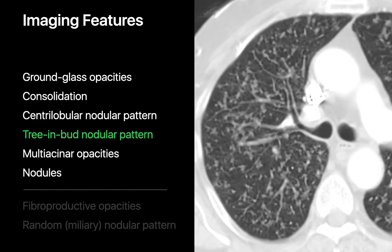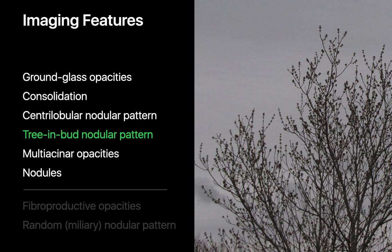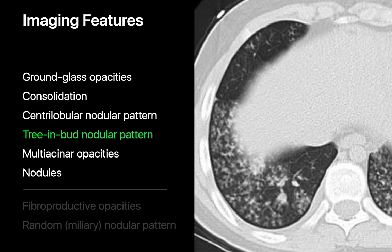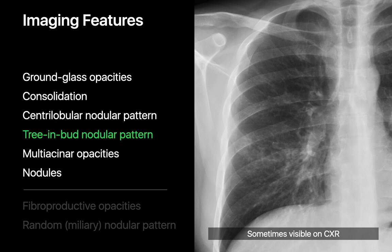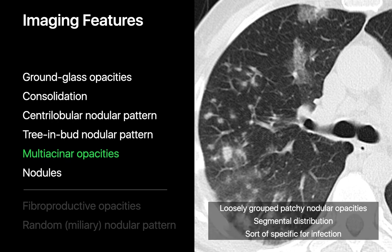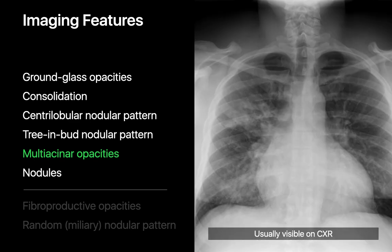We look for tree-and-bud nodular patterns, which evoke the appearance of a tree budding in springtime, presenting as multiple small clusters of discrete micronodules connected by small branching linear opacities. Tree-and-bud patterns are very specific for lung infection and are sometimes visible on chest radiography as a regional heterogeneous opacity with a subtle micronodular texture. We also look for multi-acinar lung opacities — loosely grouped patchy nodular opacities with indistinct margins, often in a segmental distribution, somewhat specific for lung infection.